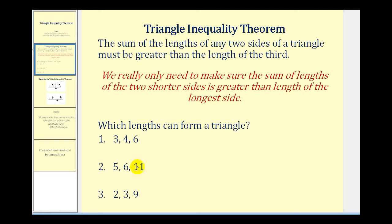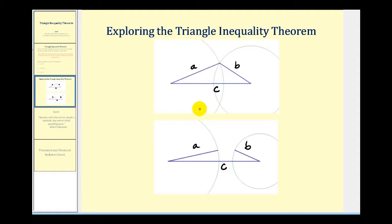So before we take a look at these questions, let's go ahead and investigate why this must be true. Here we see two diagrams, one where a triangle is possible given the lengths of the three sides, and one where a triangle is not possible given the length of three segments.